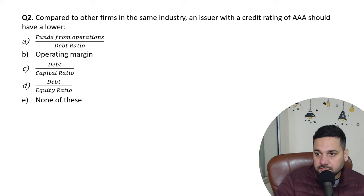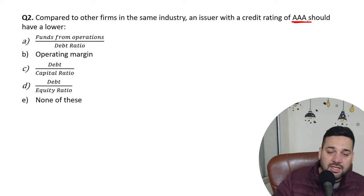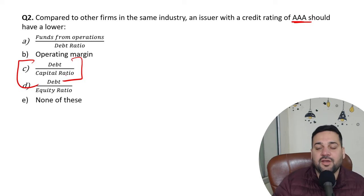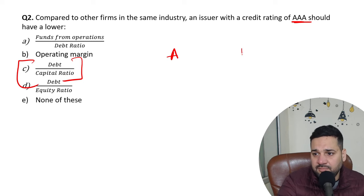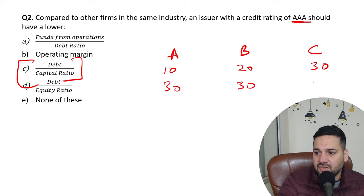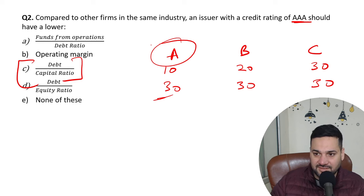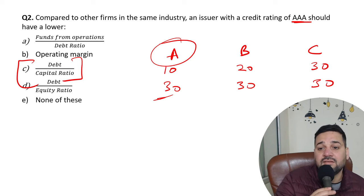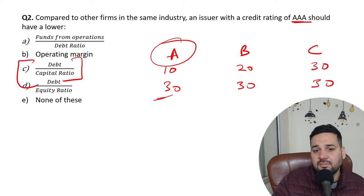Next question: Compared to other firms in the industry, an issuer with a credit rating of Triple-A — the best rating — should have a lower what? Its debt-to-capital ratio should be the lowest. For example, if Company A has debt of 10, Company B has 20, and Company C has 30, and all have capital of 30, then Company A has the lowest debt-to-capital ratio. So A's business standing is the best, its quality is the highest, and its chances of default or bankruptcy are the lowest because it has taken the least debt.